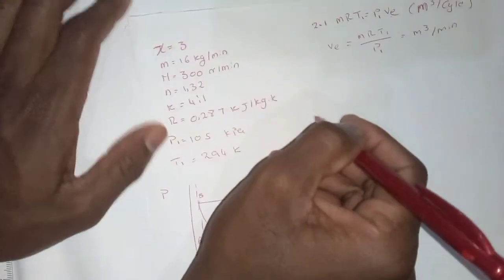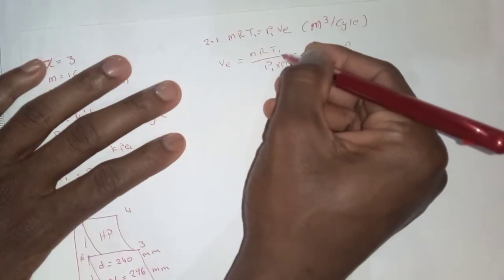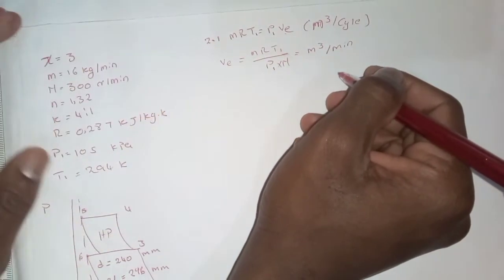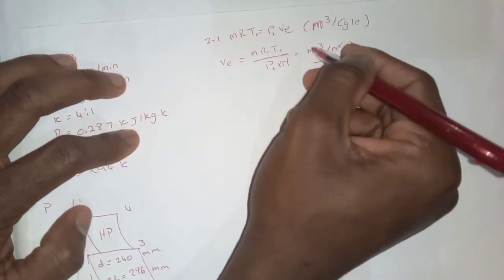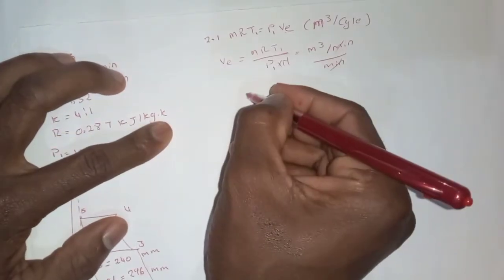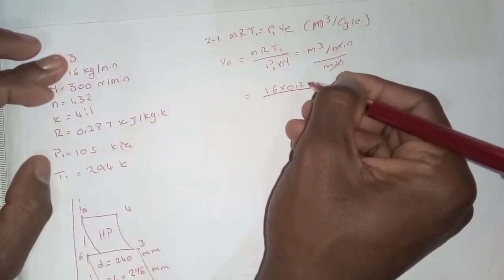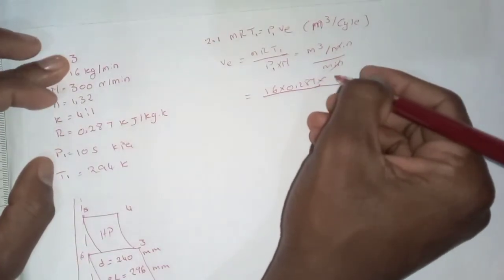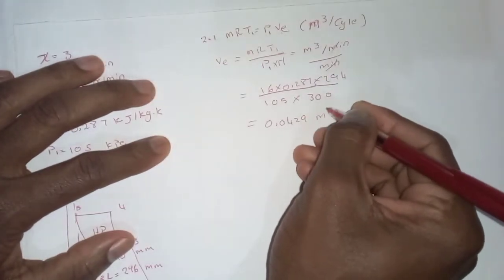Making V the subject gives us MRT1 divided by P1, which gives cubic meters per minute because our mass is given in kg per minute. To convert to cubic meters per cycle, we divide by the rotational frequency N, since revolutions per minute cancel with per minute, leaving cubic meters per cycle. Substituting: M is 16, R is 0.287, T1 is 294, P1 is 105, and N is 300. The answer is 0.0429 cubic meters per cycle.